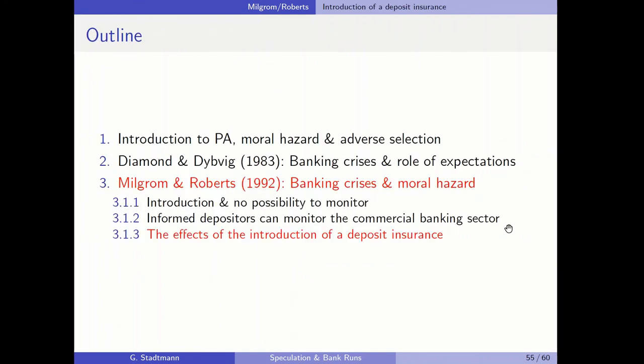In the second scenario, the risk that informed depositors will trigger a bank run disciplines the bank to opt for the secure investment alternative, and a banking market emerges. This is the main insight of the second part of the model: a banking market emerges and informed depositors discipline the commercial banking sector.